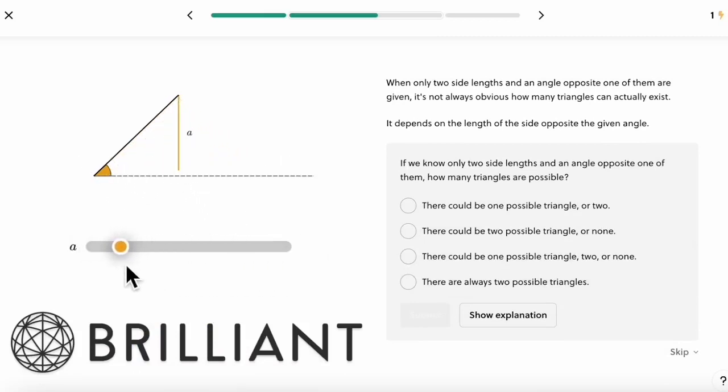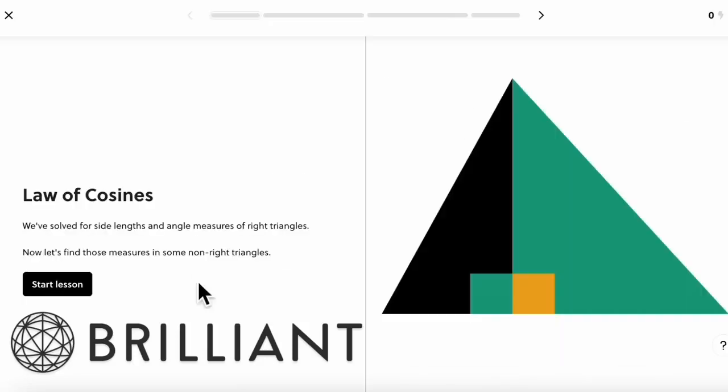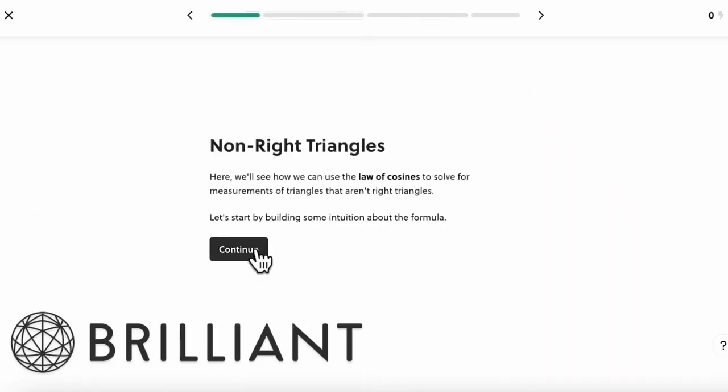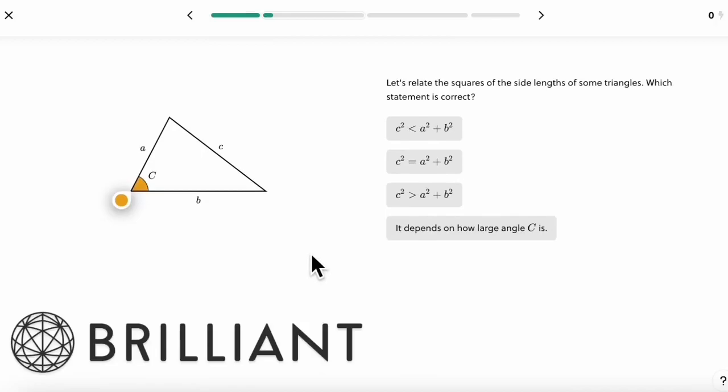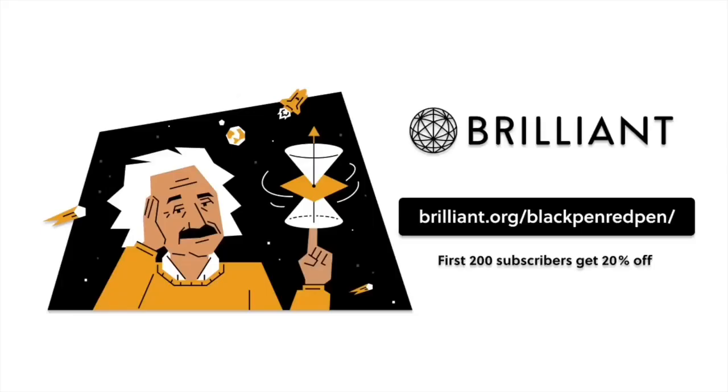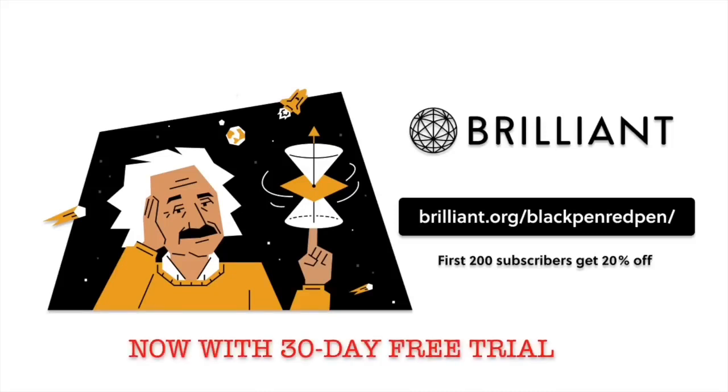Their trig and pre-calculus classes in particular are built around visual and physical intuition. Use the link in the description, brilliant.org/blackpenredpen, and you can get 20% off. Right now they also offer a 30-day free trial, so definitely go check them out and start learning today.